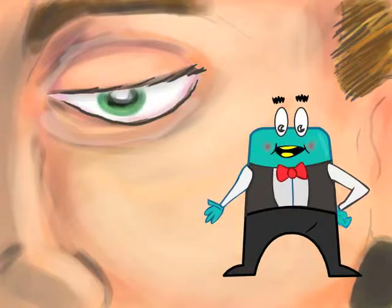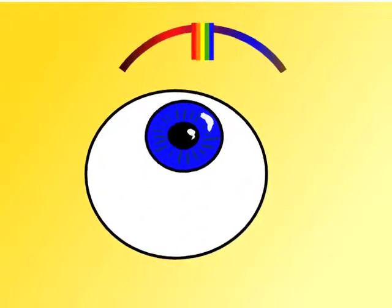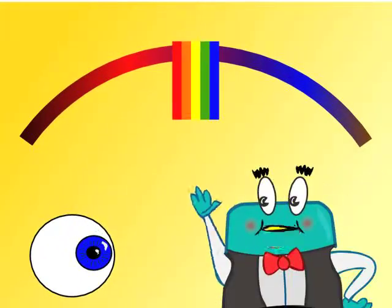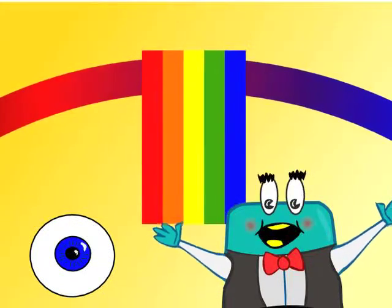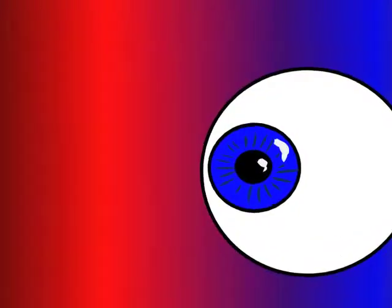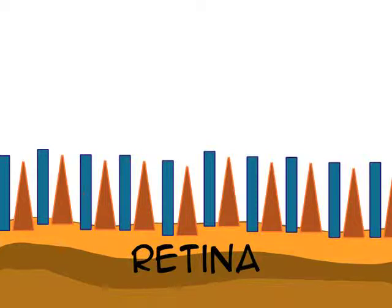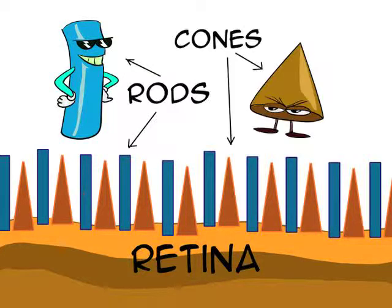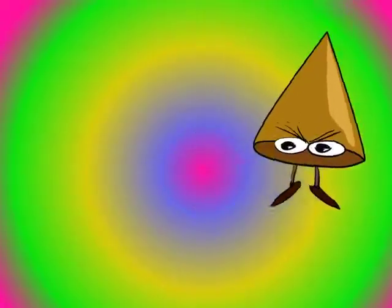We begin with the human eye. Our eyes are sensitive to a very narrow band of frequencies within the enormous range of the electromagnetic spectrum. This narrow band of frequencies is called the visible light spectrum. Light enters the eye through the pupil and strikes the inside surface of the eye known as the retina. The retina is lined with a variety of light-sensing cells known as rods and cones. The rods on the retina are sensitive to the intensity of light, and the cones are the color-sensing cells of the retina.